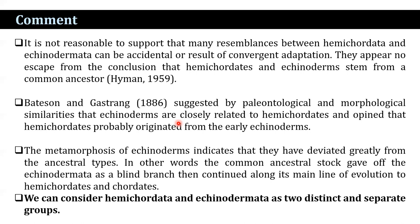Vettison and Gaston (1886) suggested, based on paleontological and morphological similarities, that echinoderms are closely related to Hemichordata and opined that Hemichordata probably originated from early echinoderms. The metamorphosis of echinoderms indicates they have deviated greatly from the ancestral type. In other words, the common ancestor stock gave rise to Echinodermata as a blind branch, then continued along its main line of evolution to Hemichordata and chordates.